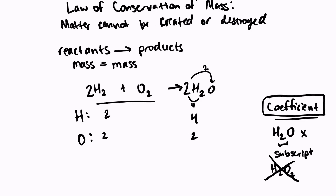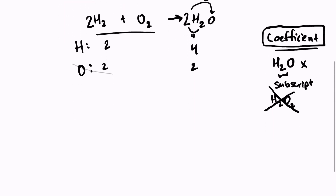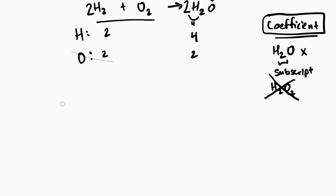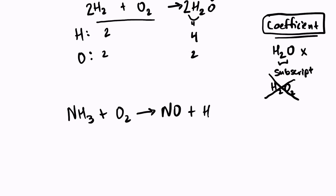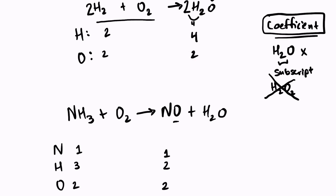Let's try a slightly harder question. We have NH₃ plus O₂ yields NO plus H₂O. We can start by counting. On the left-hand side I have one nitrogen; on the right-hand side I have one nitrogen. On the left-hand side I have three hydrogens; on the right-hand side I have two hydrogens. On the left-hand side I have two oxygens, and on the right-hand side I have two oxygens.